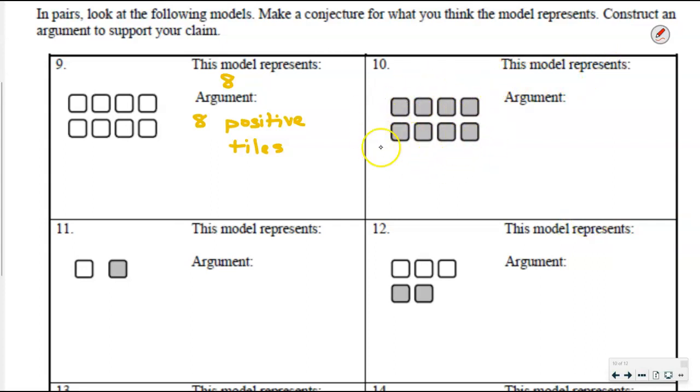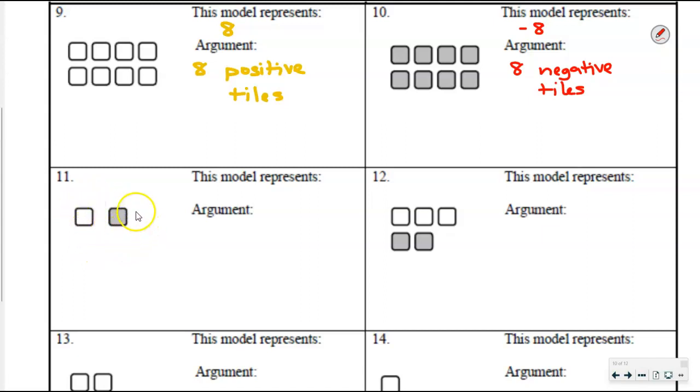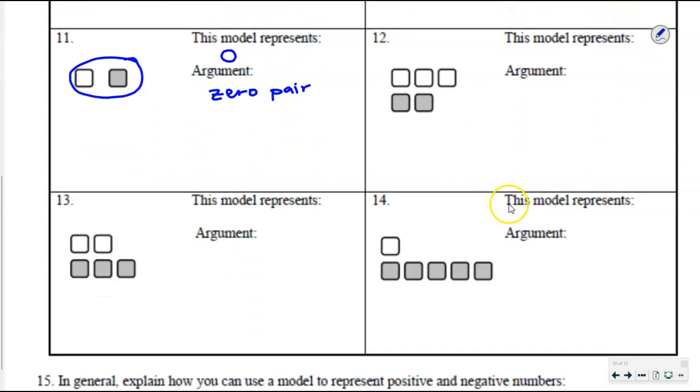So I think we're ready for the next one. What number does this model represent? Tell your neighbor first. I heard throughout the room negative eight. What is the reason that you say negative eight? All of those tiles are filled in. So I have eight negative tiles. Let's look at the next one. Number 11. What number is represented here? Whisper to your neighbor this time. So that would be my argument. My argument is going to be I have a positive and a negative together. So that is a zero pair. What is a number if I have zero pair? Zero. The number is zero. So it's zero because it is a single zero pair. You get the idea? 12, 13, and 14 with your tables. I bet you can finish it in 60 seconds. So I'm going to pause the recording as students work on 12, 13, and 14. Ready, set, go.